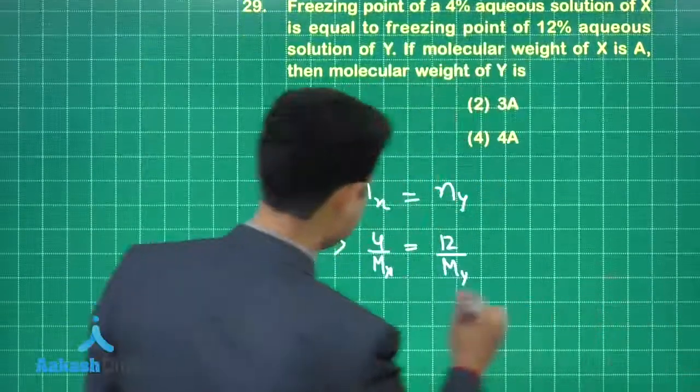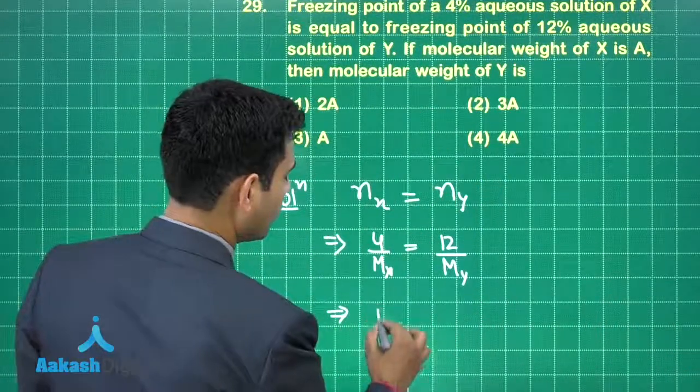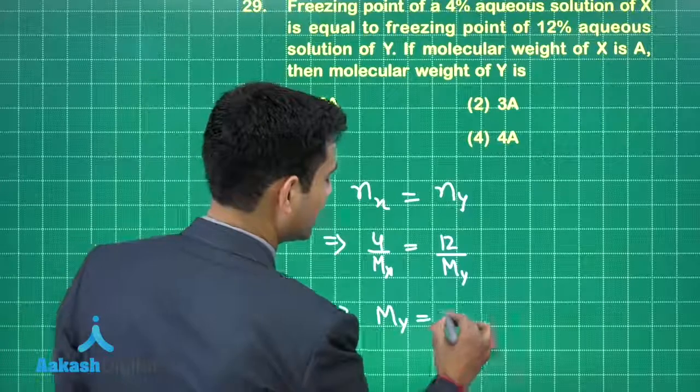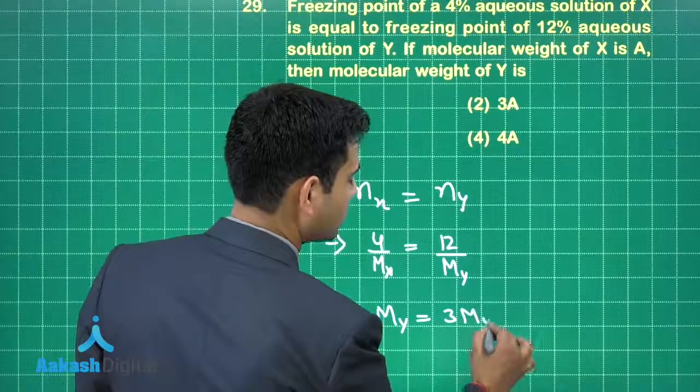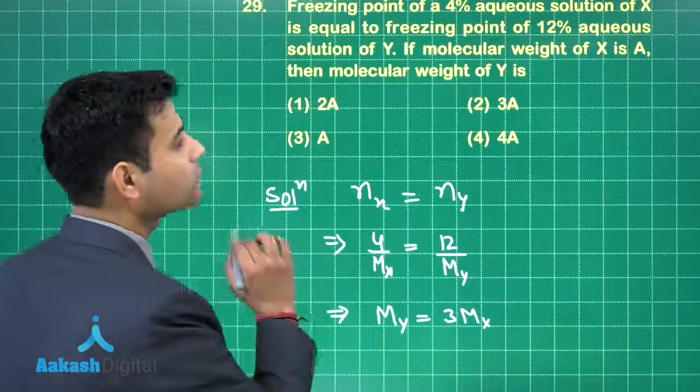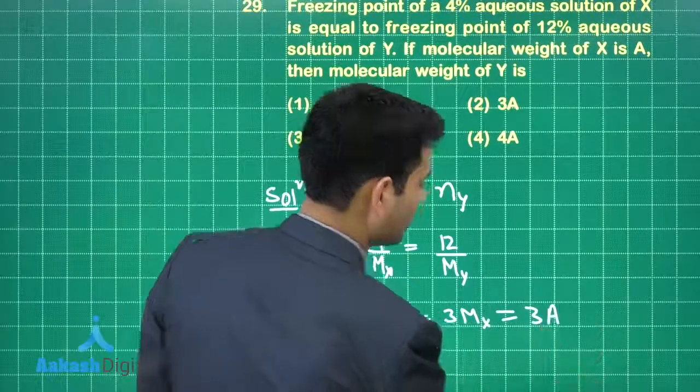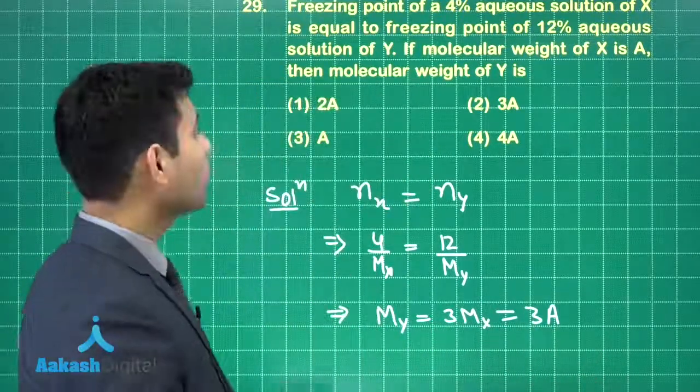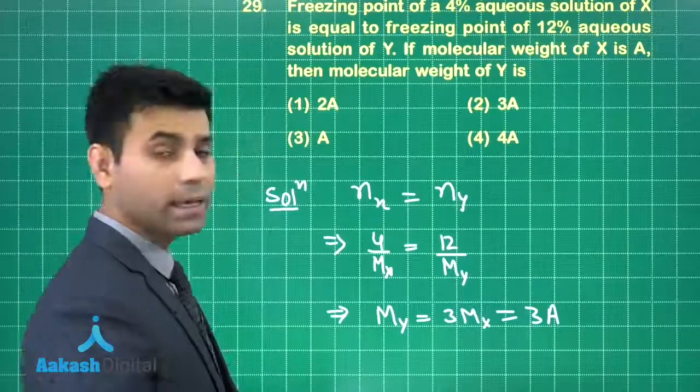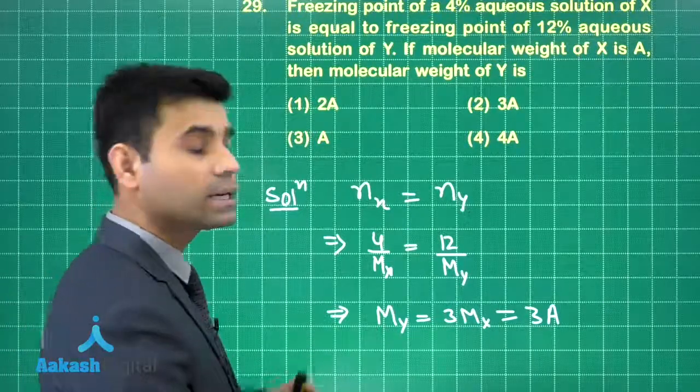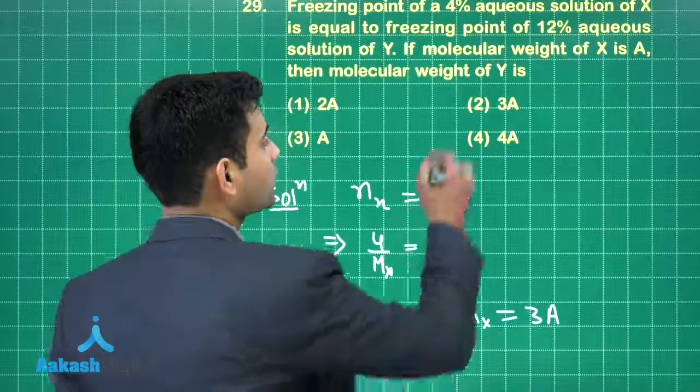So from here we can write that molar mass of Y equals 3 times molar mass of X. It is given that molar mass of X is given A. So this will be 3 times A. So the molecular mass of Y or molar mass of Y will be 3A. So the correct answer for this question will be option 2.